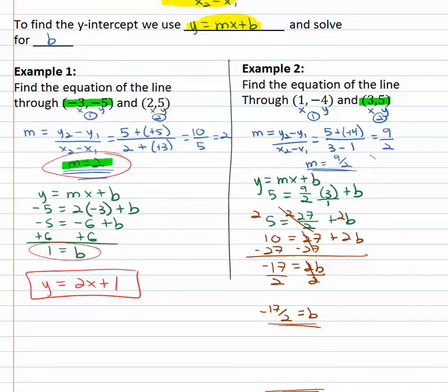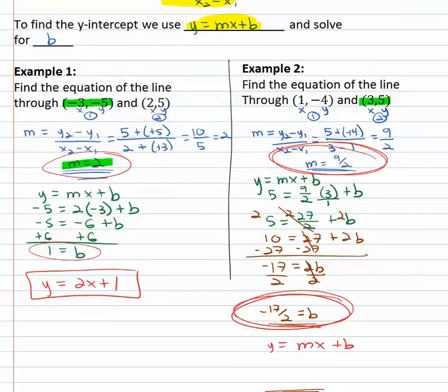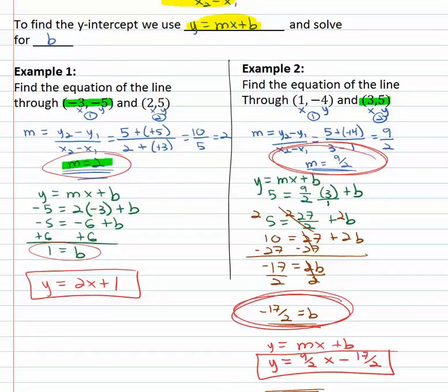So we now have the slope of nine halves and the y-intercept of negative seventeen halves. With y equals mx plus b, we plug those in: y equals nine halves times x minus seventeen halves. This is the equation of the line that goes through the points one, negative four and three, five. To find these equations, we first find the slope using y₂ minus y₁ over x₂ minus x₁, then plug everything into the slope-intercept equation y equals mx plus b to solve for b.